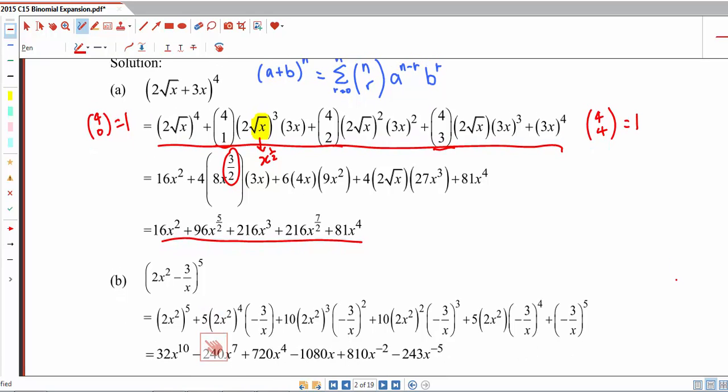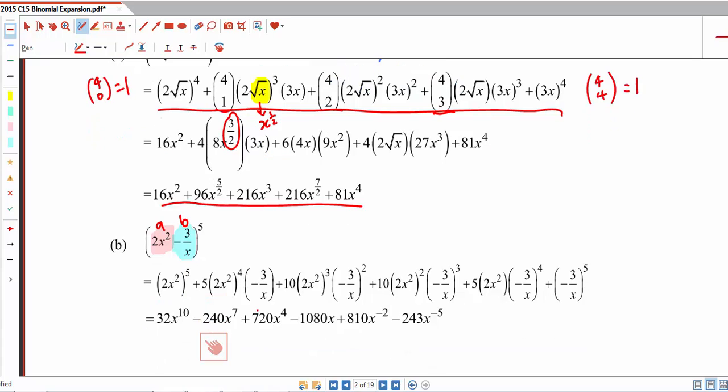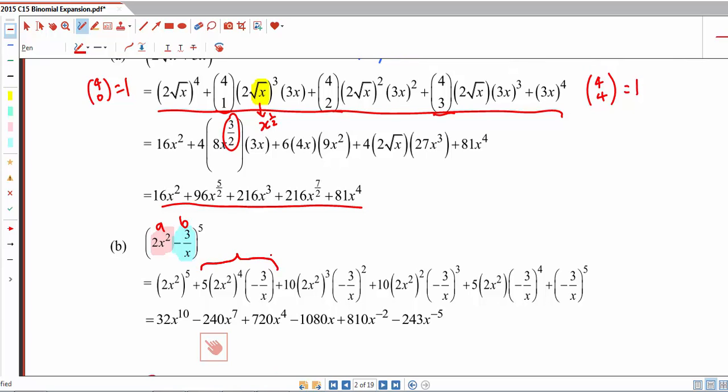For part b, we have 2x squared minus 3 over x. So 2x squared will be a, whereas negative 3 over x will be our b. So this is what we'll get when we apply the binomial expansion formula. In order to simplify this, we shall rewrite this as 2 to the power of 4. So we'll bring in the power, and 2 times 4, x to the power of 8.